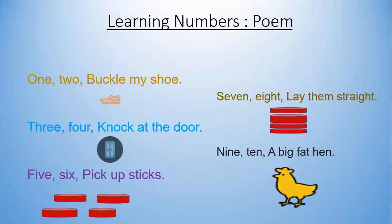Now we are going to learn a poem about numbers: One, two, buckle my shoe. Three, four, knock at the door. Five, six, pick up the sticks. Seven, eight, lay them straight. Nine, ten, a big fat hen. Isn't it fun?